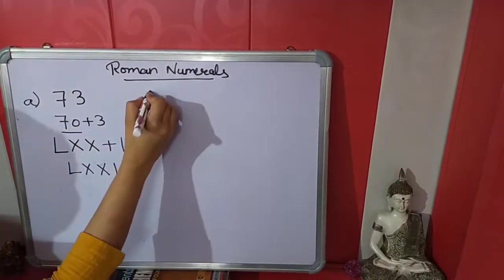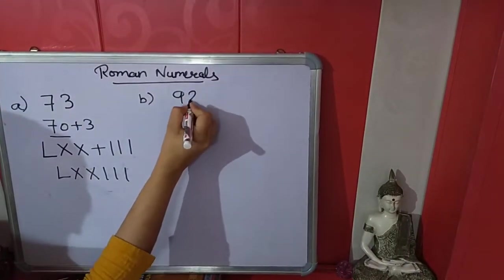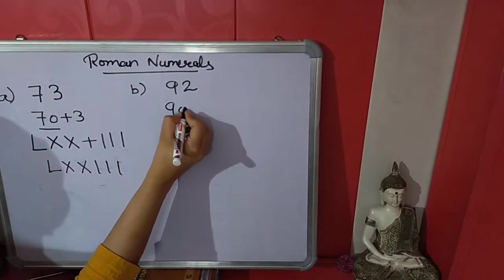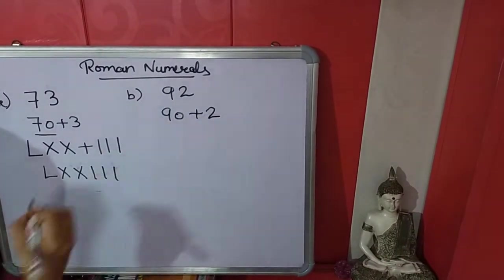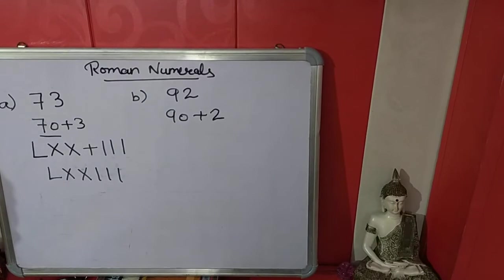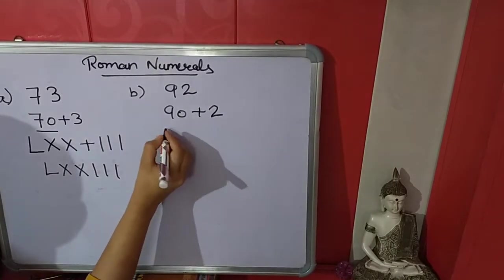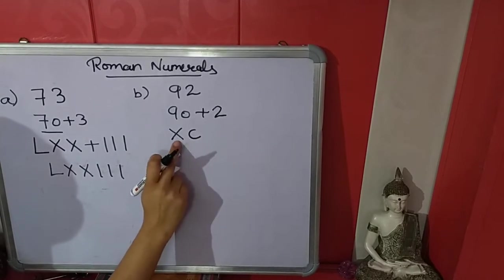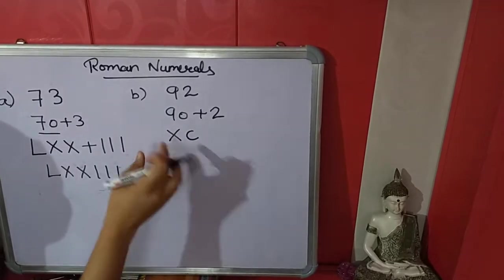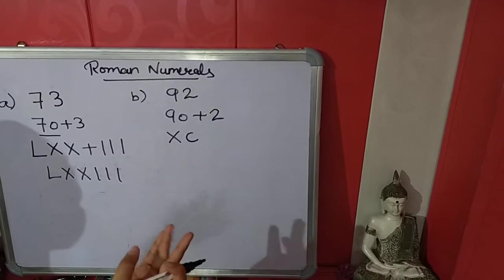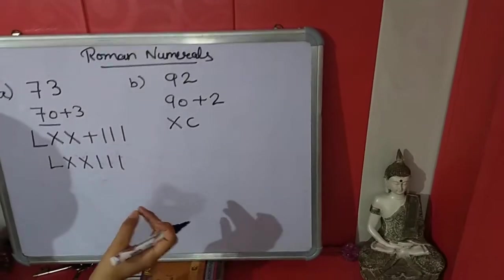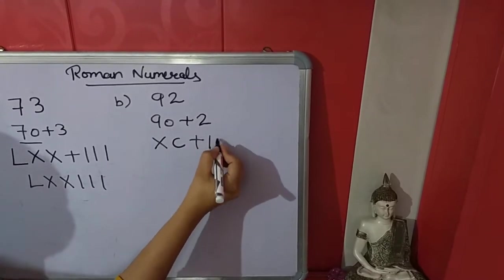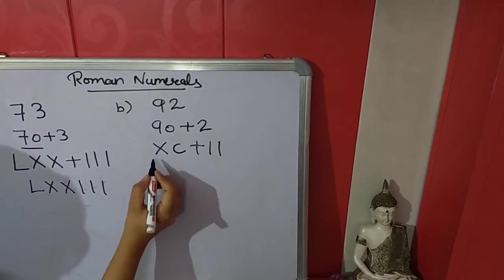Now we will take another example, like 92. We have to convert into Roman numerals. Again we will expand it, 90 plus 2. What is Roman numeral of 90? XC. C is 100, X is 10, 100 minus 10 is 90. You can also learn 50, 60, 40, 70, 80, 90, 100, these Roman numbers. Plus 2, it is Roman numeral II.